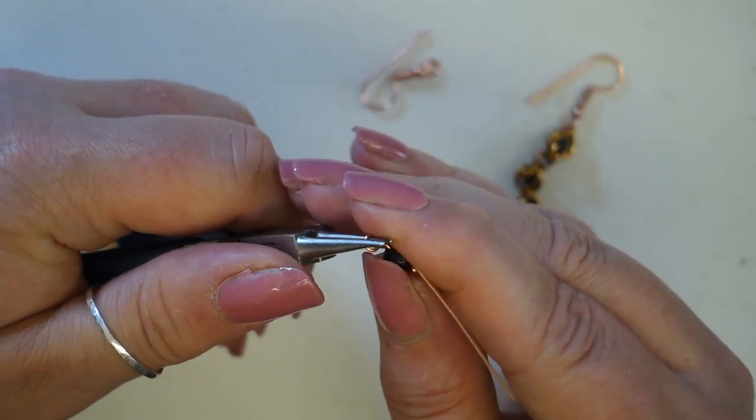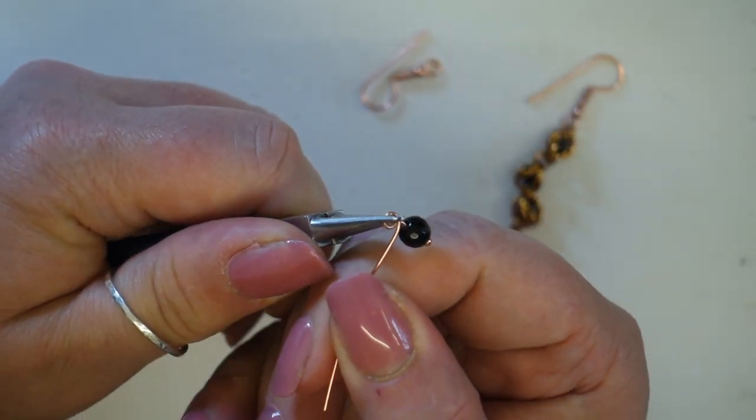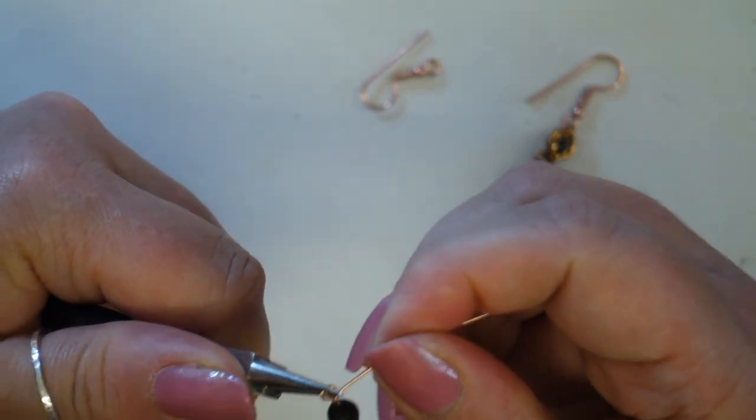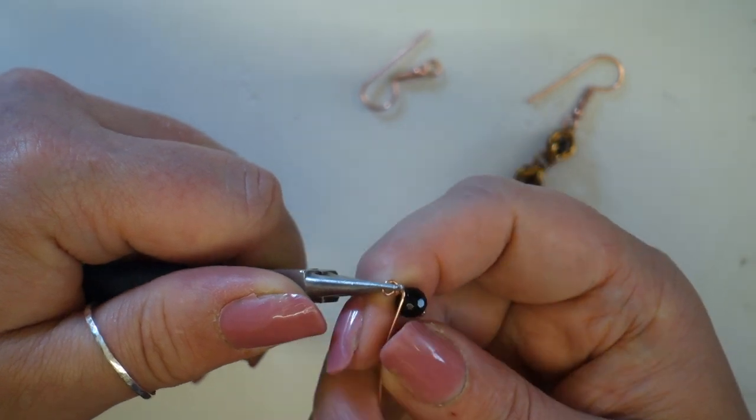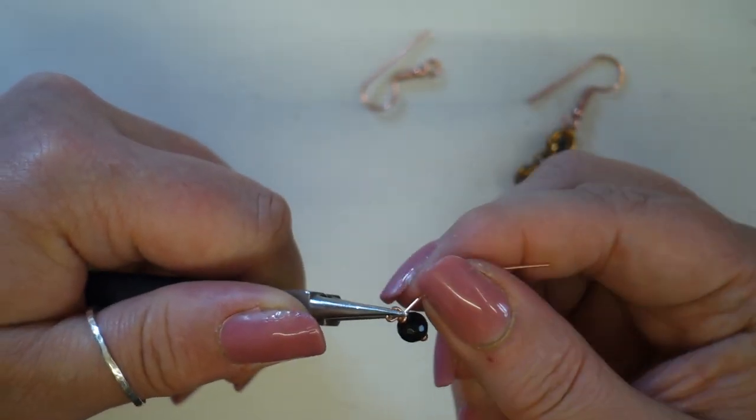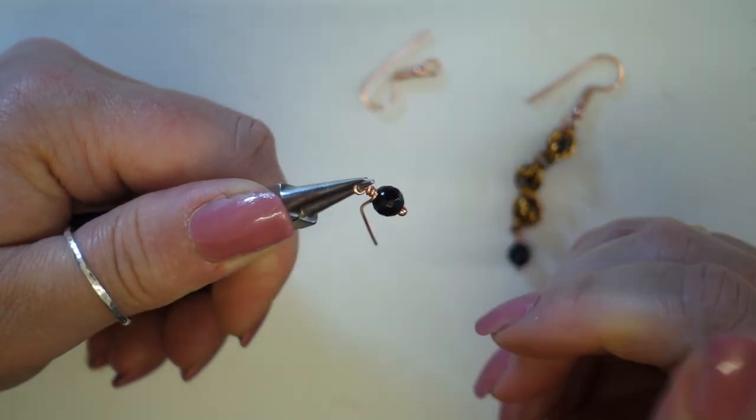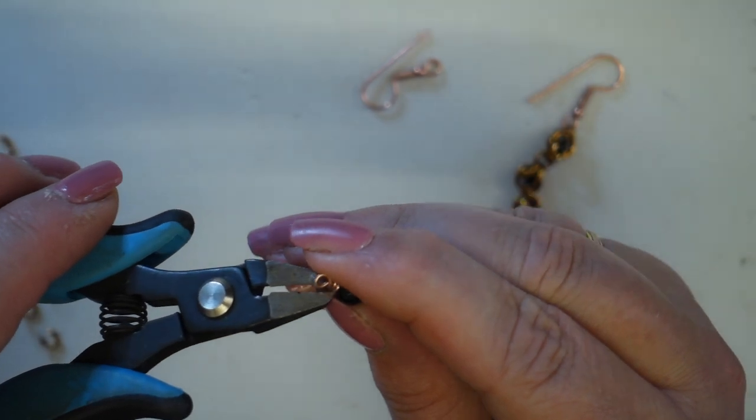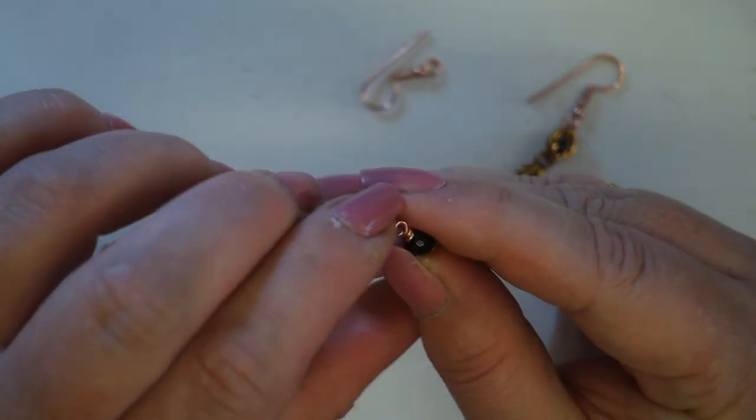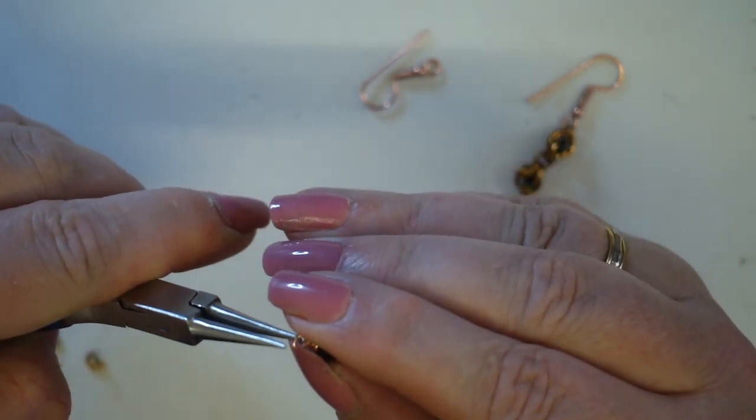I'm going to make sure I've got my pliers in the right position, take the tail of this head pin and bring it all the way around so it goes nice and straight, then wrap it down towards the top of the bead. Then I'll take my cutters and snip that out of the way. There's my ready-made link that I can attach directly onto a jump ring.